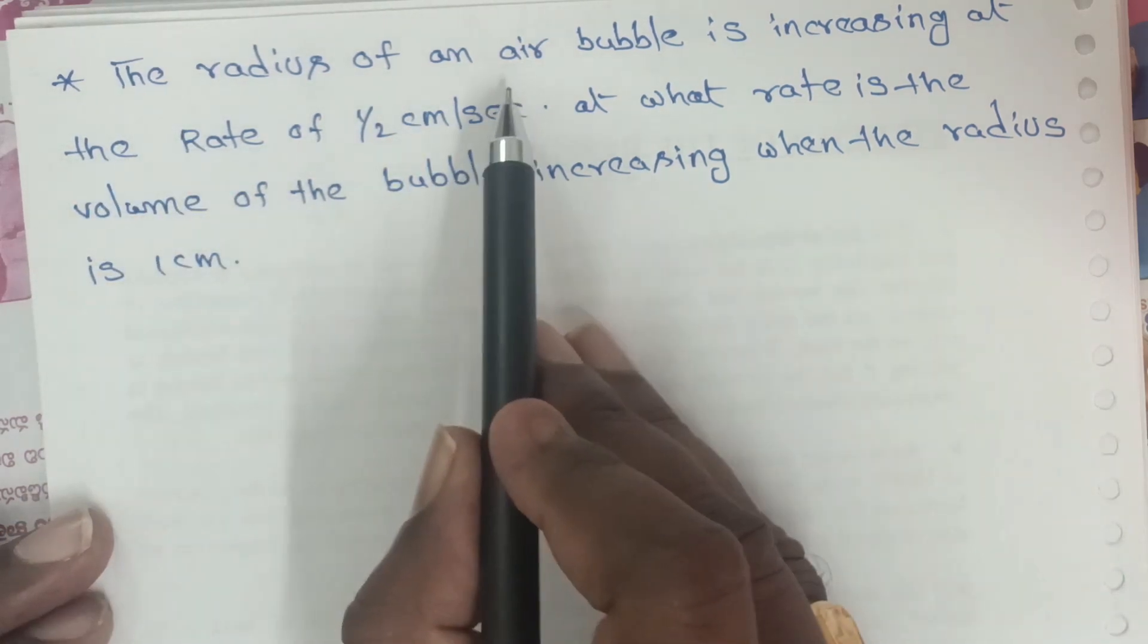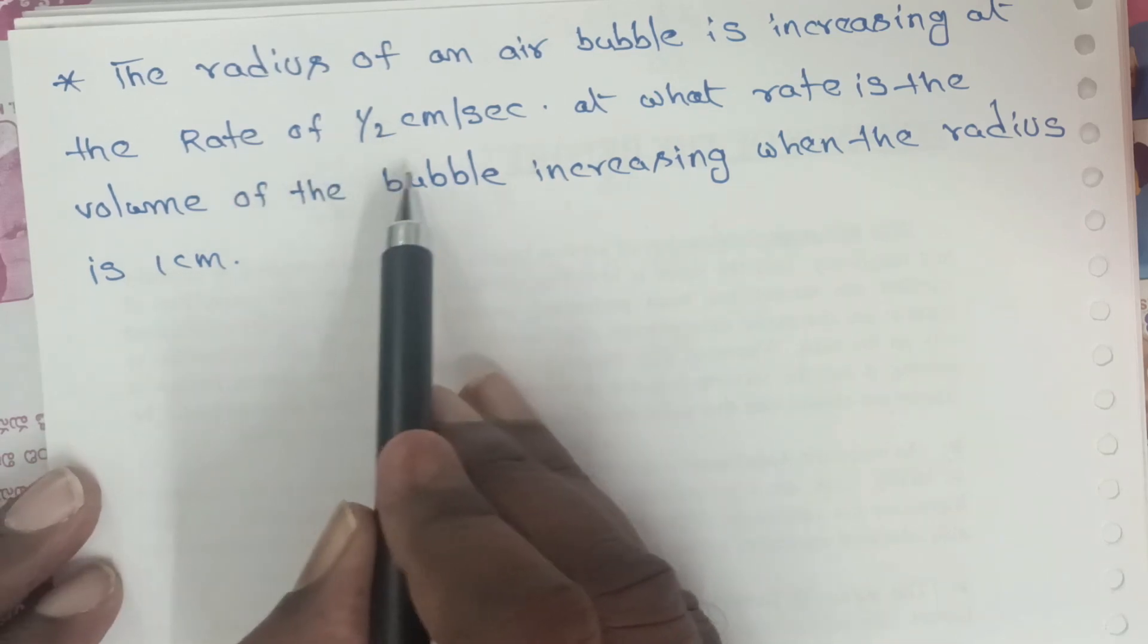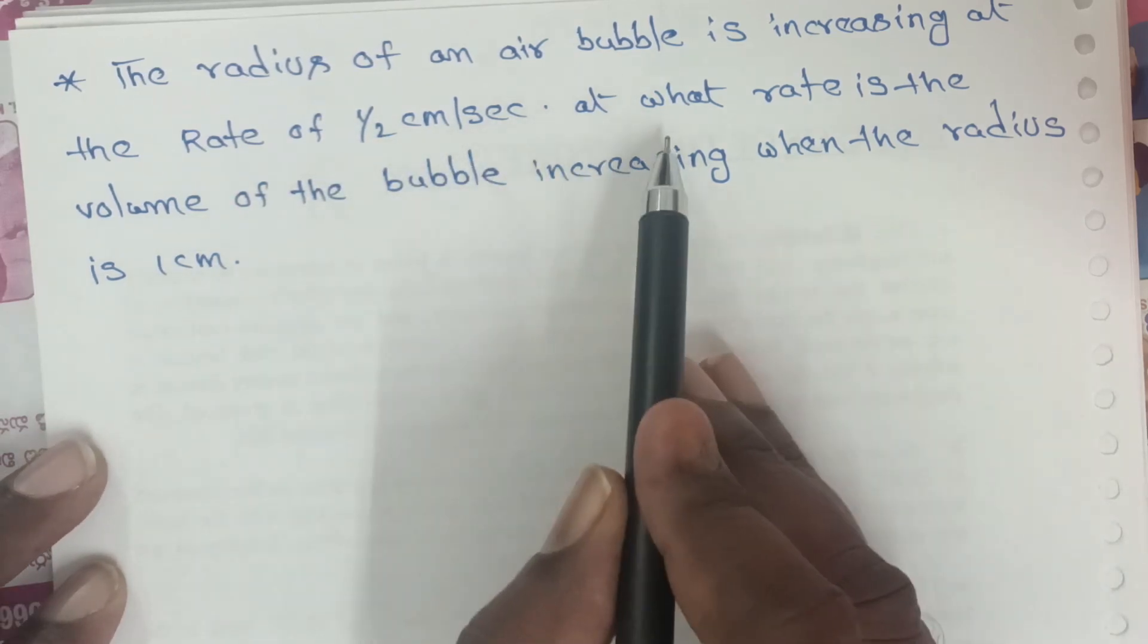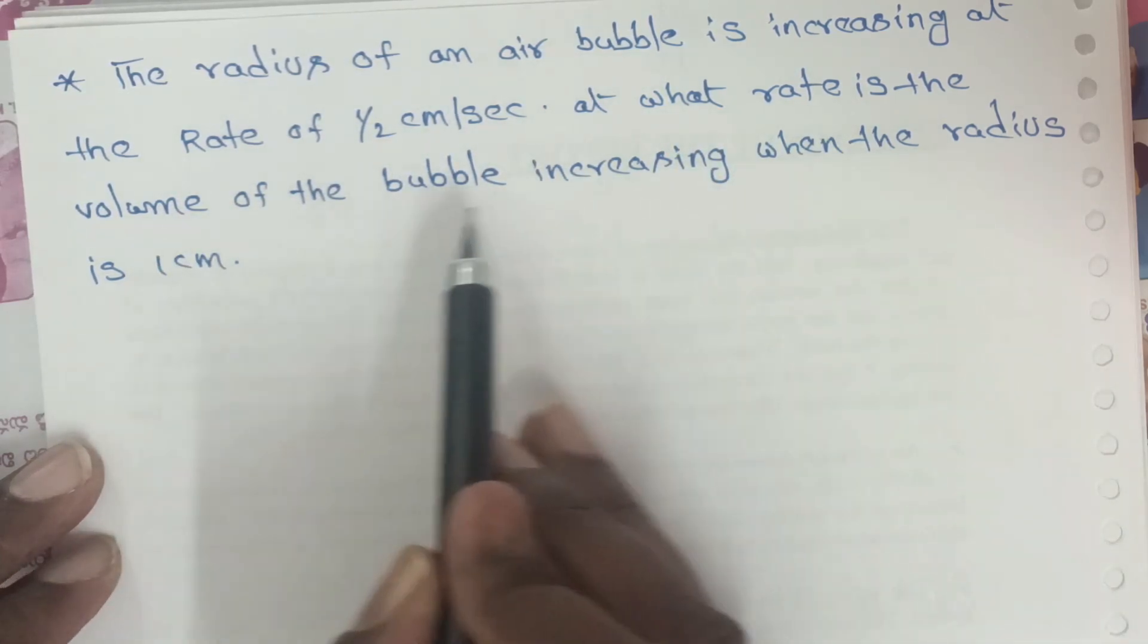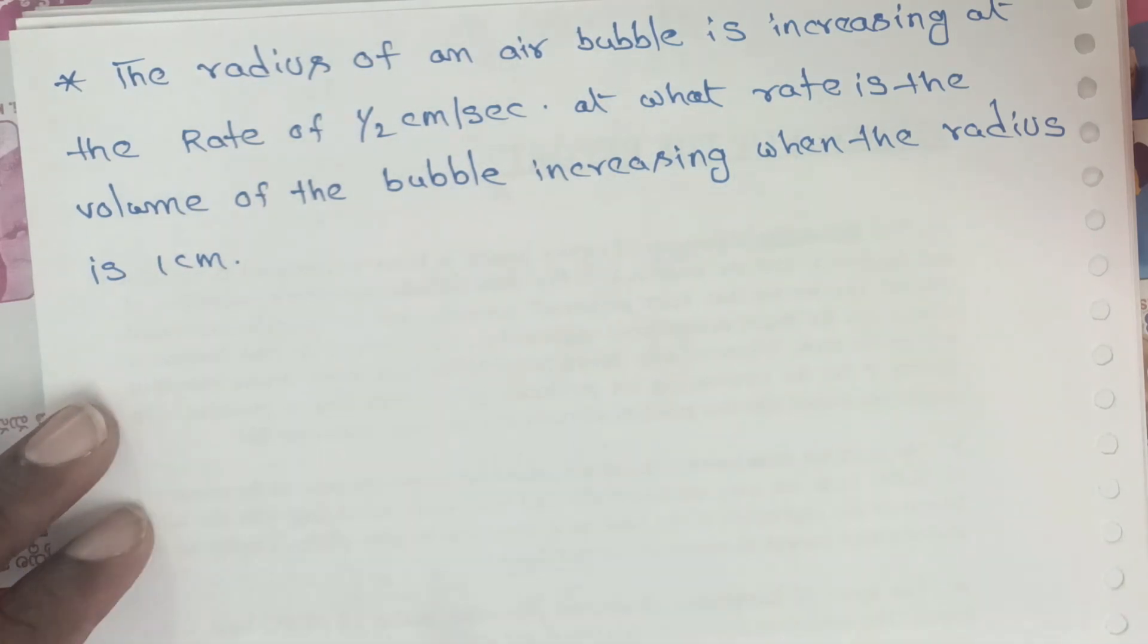The radius of an air bubble is increasing at the rate of 1/2 cm per second. At what rate is the volume of the bubble increasing when the radius is 1 cm?